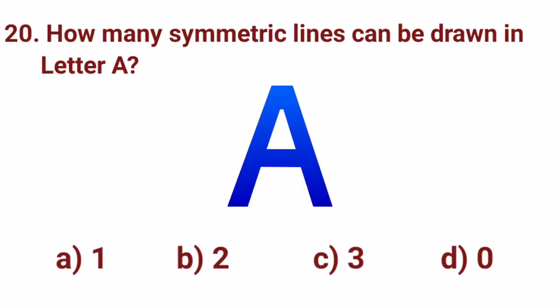Now, next, question number 20 is, how many symmetric lines can be drawn in alphabet A? Dear students, do you know about line of symmetry? Yes, exactly right. A line of symmetry is a line that cuts a shape exactly in half. This means that if you were to fold the shape along the line, both halves would match exactly. So, how many such lines we can draw in alphabet A so that it can be divided into two equal halves? Yes, we can draw one such line of symmetry.